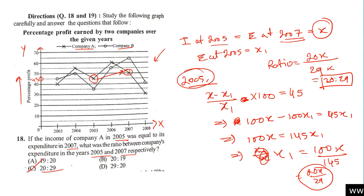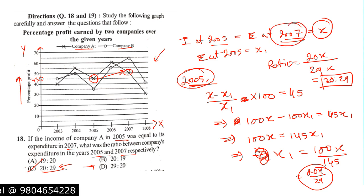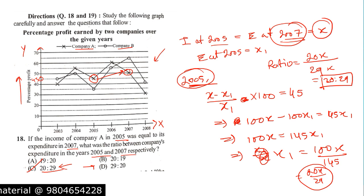The answer is option C: 20 is to 29. Be very careful — there are two similar options: 20:29 and 29:20. The expenditure at 2005 was 20X/29 and at 2007 was X, so the ratio is 20:29 in that order. Remember that — it's very important.